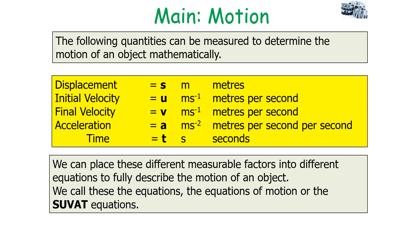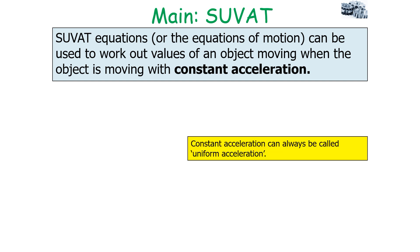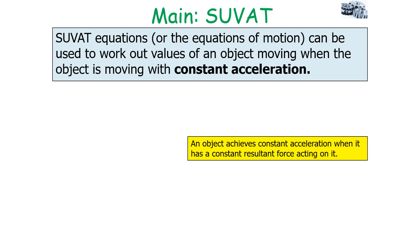We can place these different measurable factors into different equations to fully describe the motion of an object. We call these the equations of motion, or the SUVAT equations. The SUVAT equations can be used to work out the values of an object moving with constant acceleration. Constant acceleration can also be called uniform acceleration. These equations involve motion in a straight line at a constant acceleration. An object achieves constant acceleration when it has a constant resultant force acting on it.